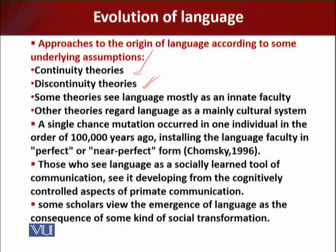Continuity theory talks about a continuous process, whereas discontinuity theory talks about a very sudden and abrupt emergence during the course of human evolution.